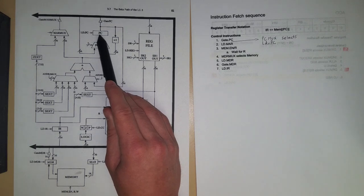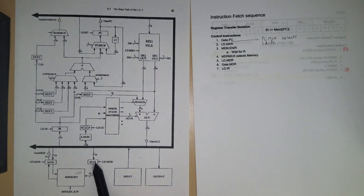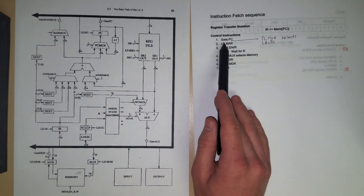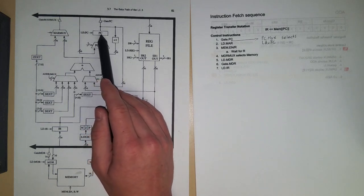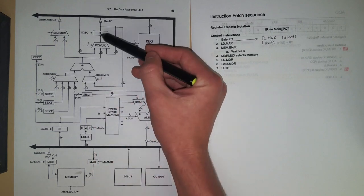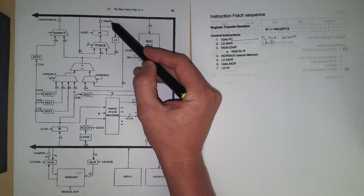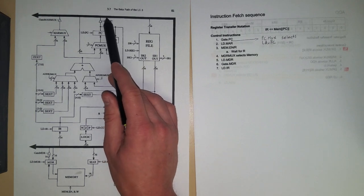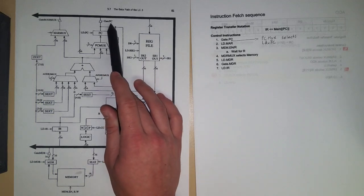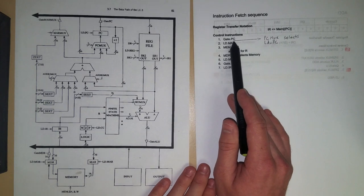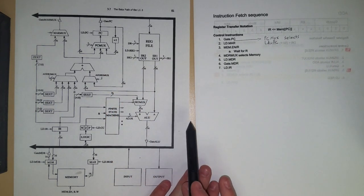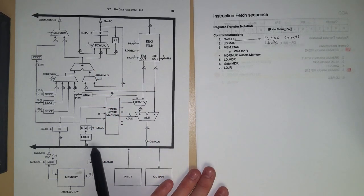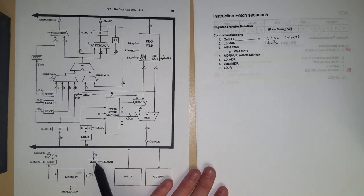Looking at the data path, we have the PC at the top. We're going to take the contents of the PC — that address of our next instruction — put it onto the main bus and send it into the MAR so that we can tell memory where we want to read from. The first signal we assert is gate.PC, which lets the contents of the PC go onto the main bus. Then we assert load.MAR to write the address into the MAR.